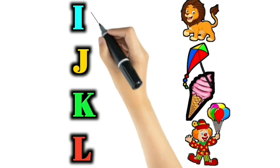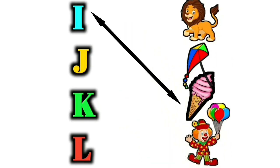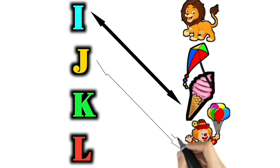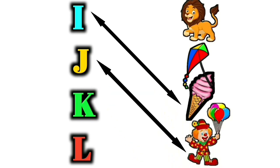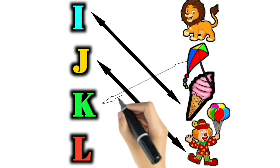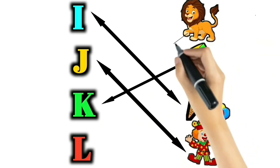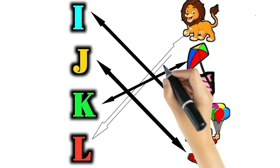I for Ice Cream. J for Joker. K for Kite. L for Lion.